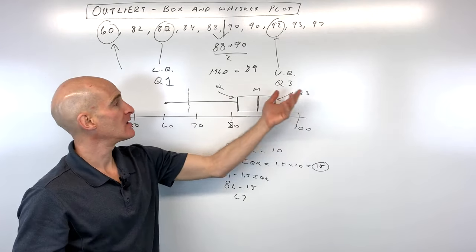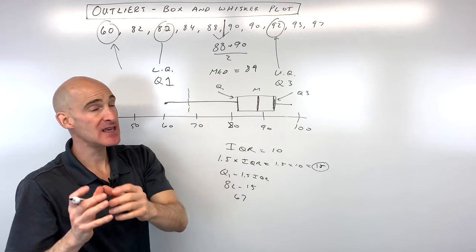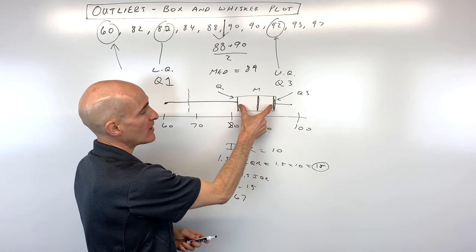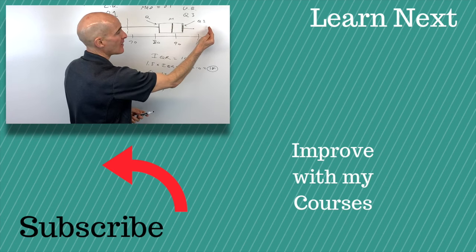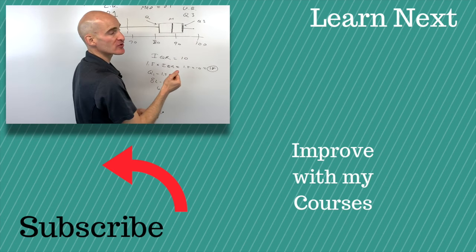So here would be our outlier of 60. Again, we didn't have any that were above the data set. We had some that were below the data set. But the key is find the interquartile range, multiply by 1.5, add it to the upper quartile. If there's any numbers greater, those are going to be outliers.